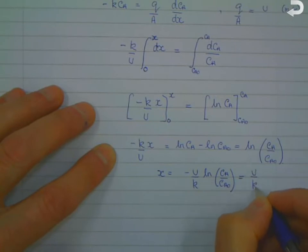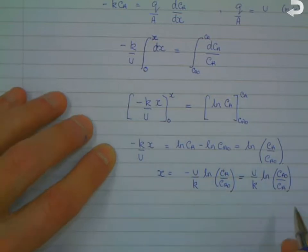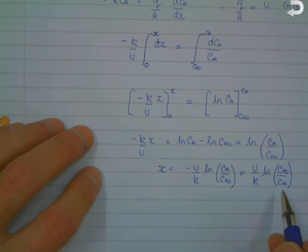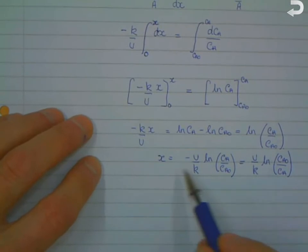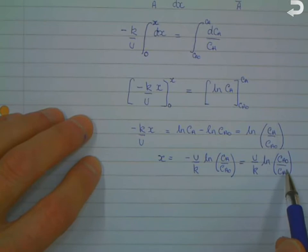Just inverting that expression inside the log there, that becomes CA0 over CA. And that's an expression that will give you the length required for a given conversion from CA0 to some value of CA, as you know the kinetic rate constant and velocity.